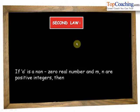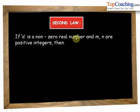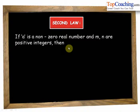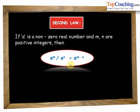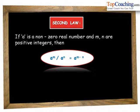The second law says that if a is a non-zero real number and m and n are positive integers, then a to the power of m divided by a to the power of n is equal to a to the power of m minus n.